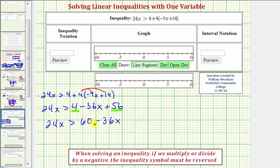Now here we're trying to solve for x, and we have x terms on both sides. We want the x terms on one side. So for the next step, let's go ahead and add 36x to both sides of the equation. Notice here we have 60x is greater than 60 since this is zero.